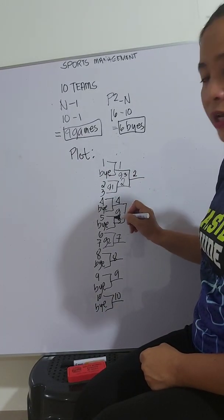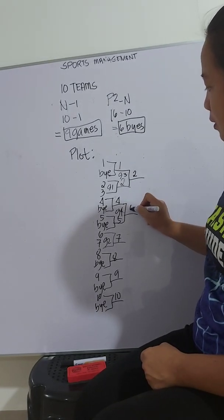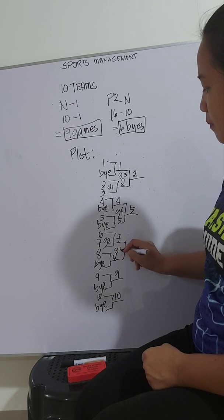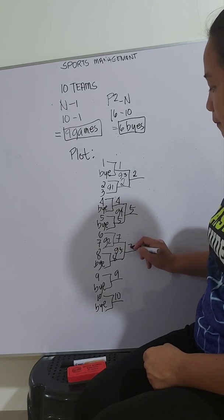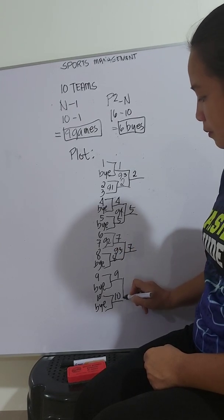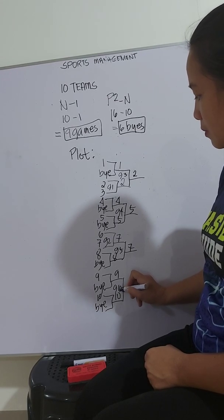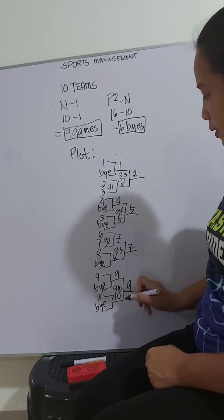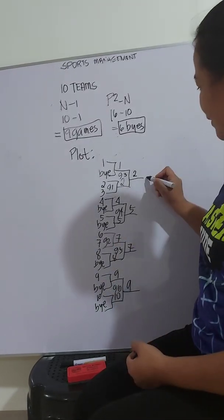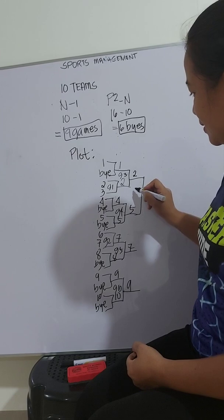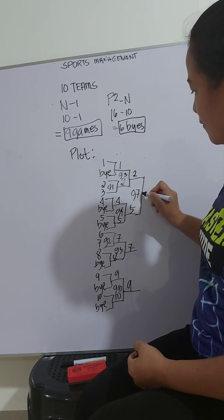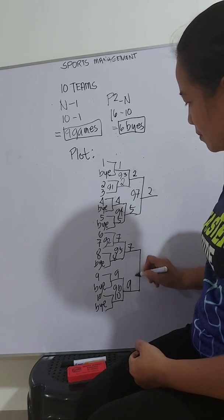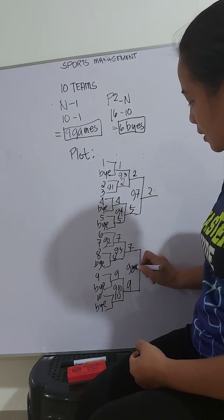This is our game 4. This is our game 5. Game 6. We're almost done. This is our game 7. This is our game 8.